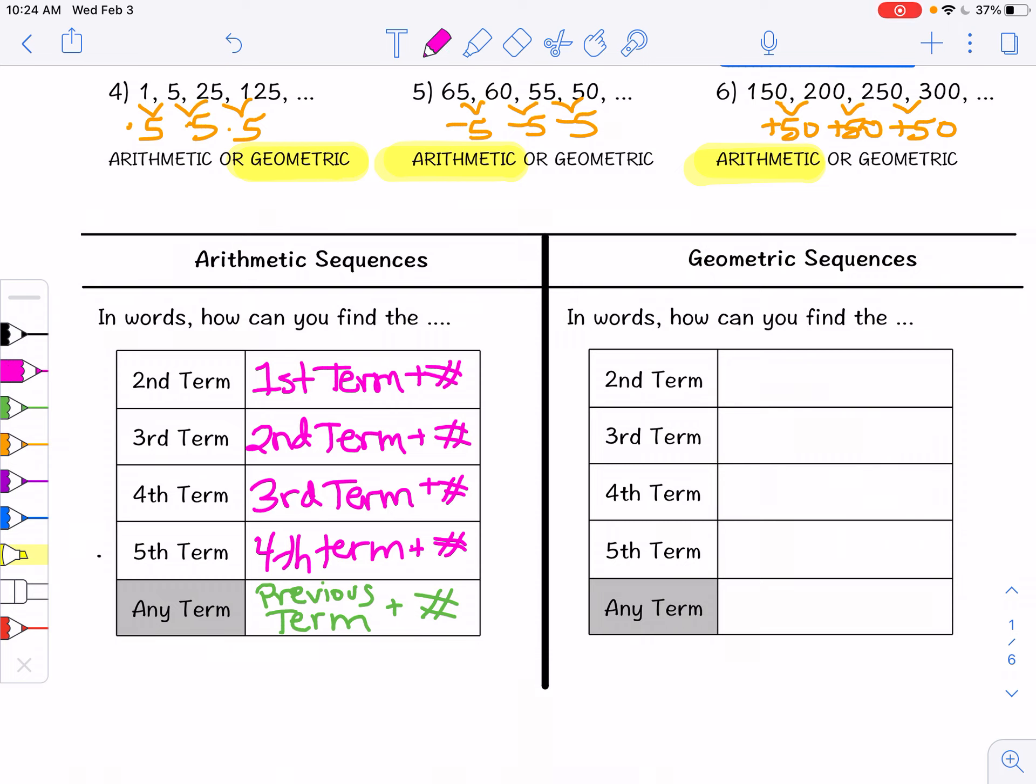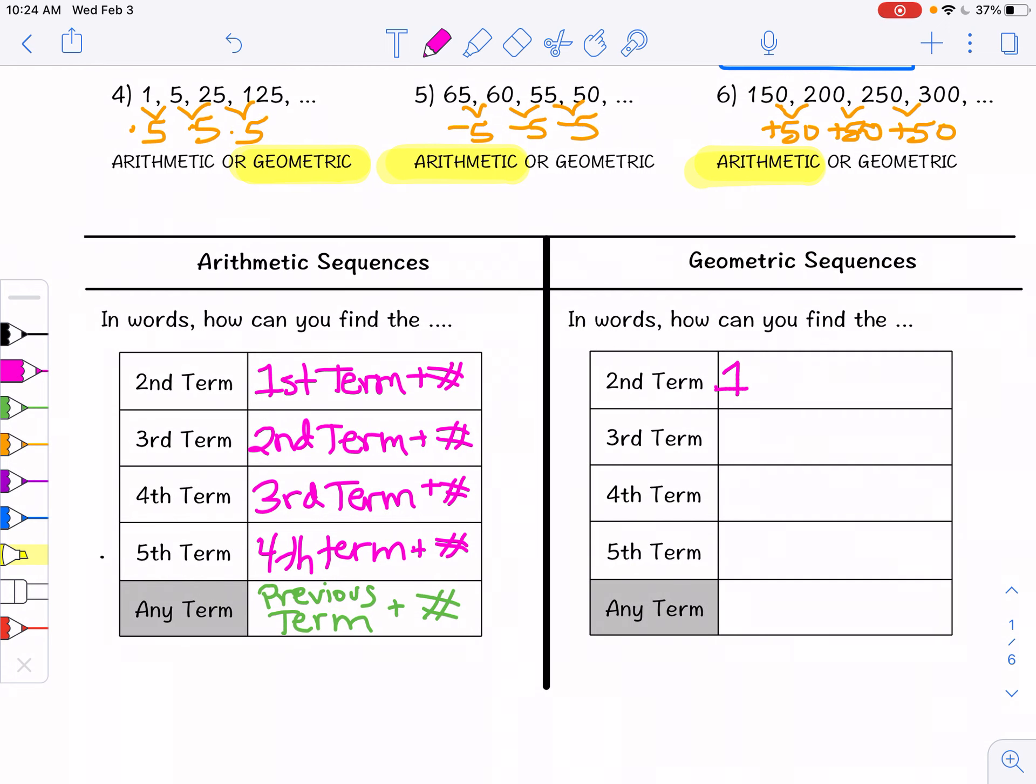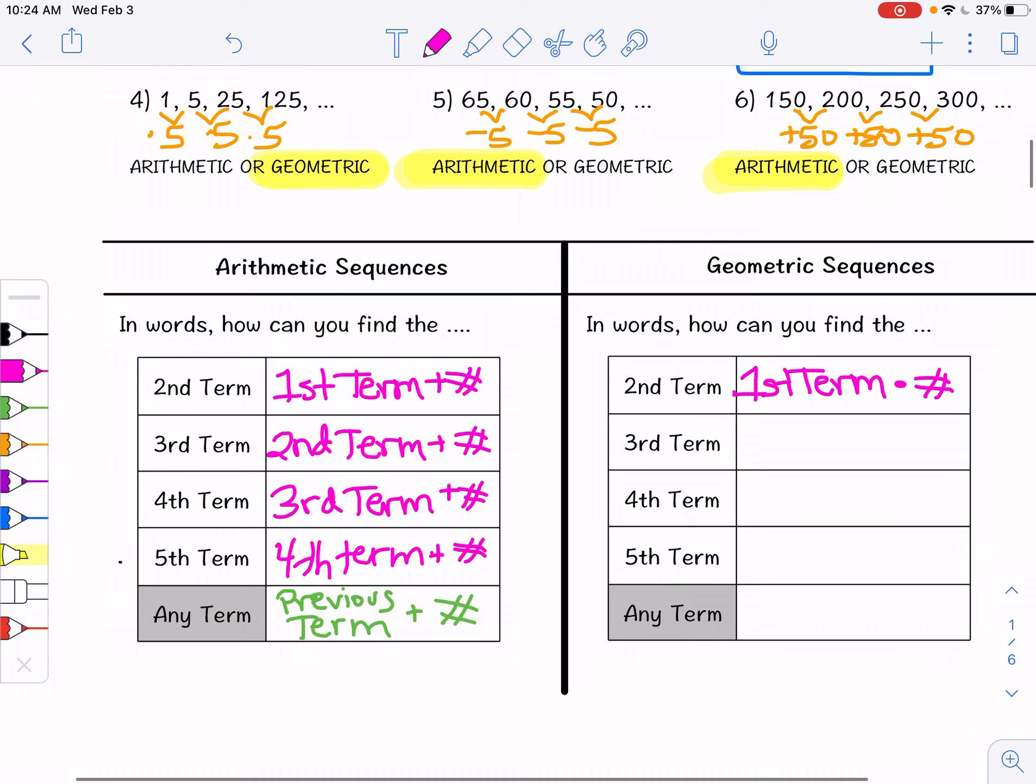Similarly, for geometric sequence, to get the second term we need the first term times some number. So to get the third term we need the second term times some number. For the fourth term we need the third term times some number.